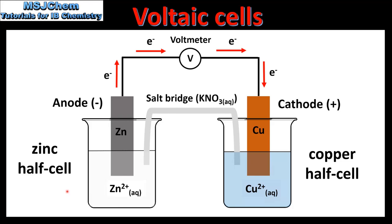Here we have a diagram of the Voltaic cell that we saw in the previous slide. On the left we have a zinc half cell and on the right we have a copper half cell. The zinc half cell is composed of a zinc electrode in a solution of zinc ions, and the copper half cell is composed of a copper electrode in a solution of copper ions. The two half cells are connected by a salt bridge and an external circuit. The zinc half cell is called the anode and the copper half cell is called the cathode. In a Voltaic cell the anode is negative and the cathode is positive.